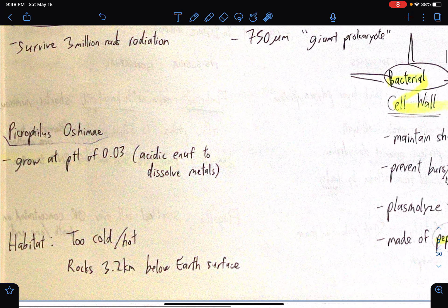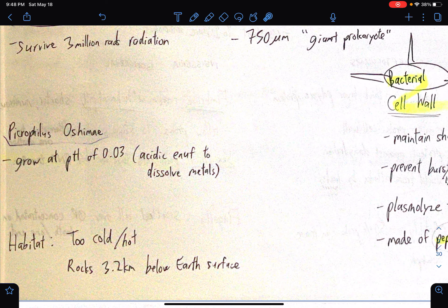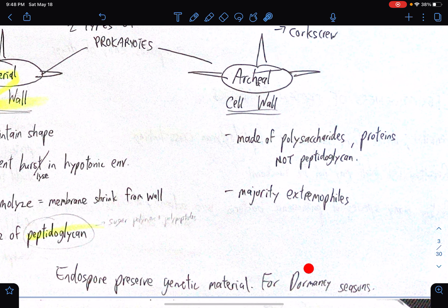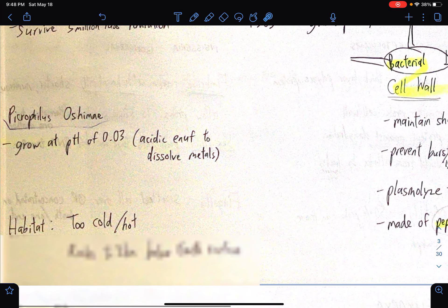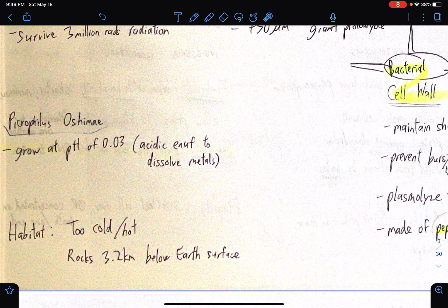So Picrophilus oshimae. It grows at a pH level of 0.03. This level is acidic enough to dissolve metals. And yeah, what's the habitat for prokaryotes? If it's too cold or too hot, they can survive in those scenarios. I think it has partly something to do with its ability to be dormant if the living circumstances are unfavorable. So that's one way that they cope, in order to survive. And yeah, they also live in rocks 3.2 kilometers below the earth's surface.